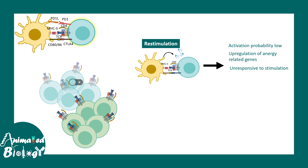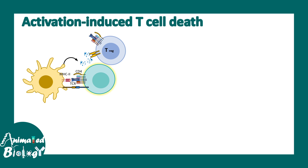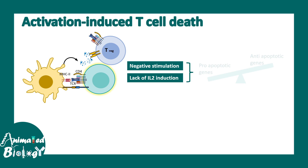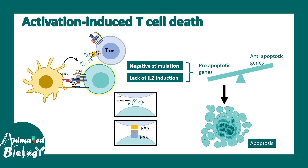This is not generalized for the entire immune system — other T-cells recognizing different antigens, such as the green ones shown, would still be activated normally. This tells us that peripheral tolerance is extremely specific. There can also be activation-induced death of T-cells through negative stimulation and lack of IL-2, which upregulate pro-apoptotic genes leading to T-cell destruction. FasL and Fas interaction can also lead to apoptosis, ultimately eliminating autoreactive cells.